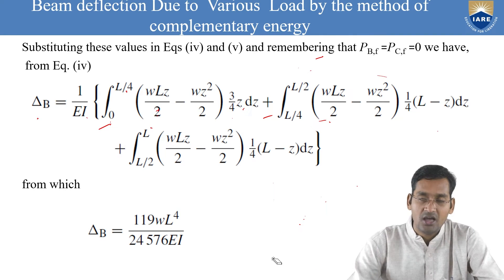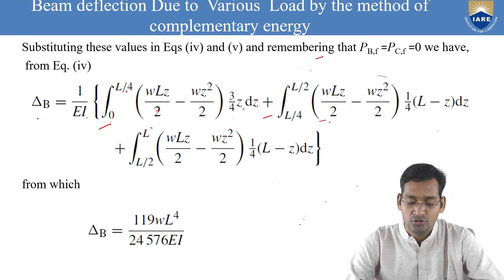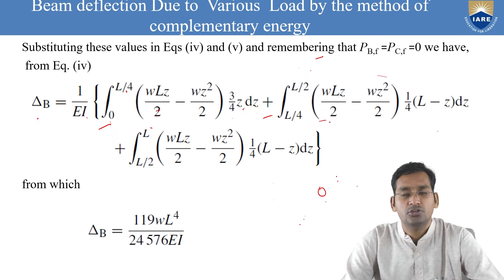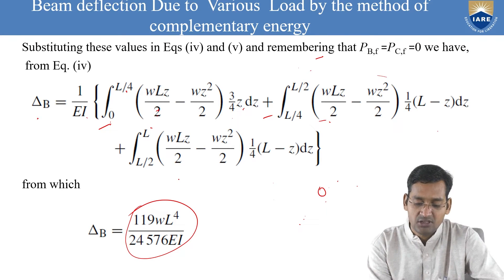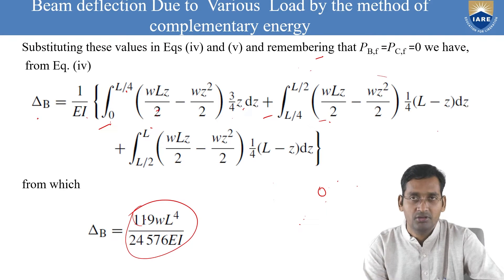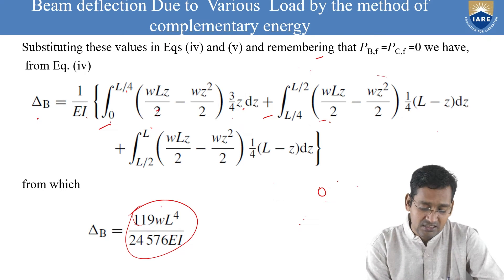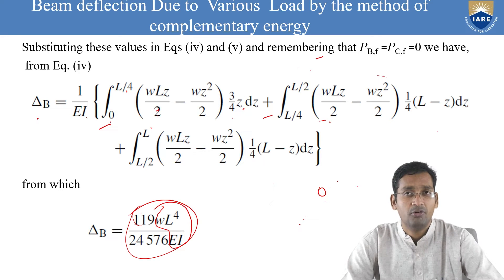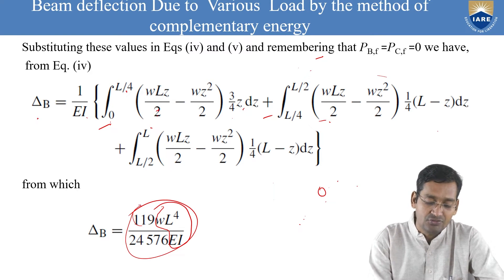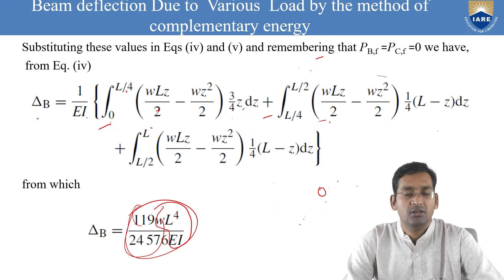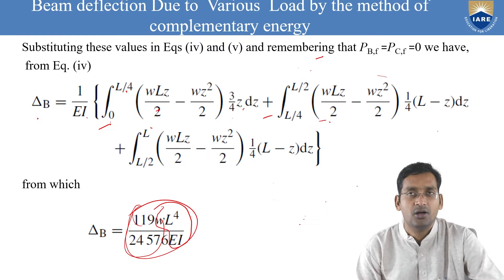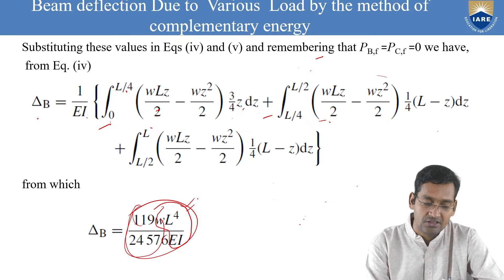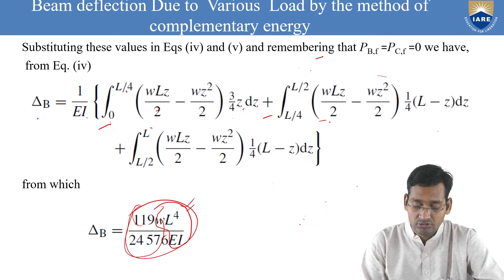When evaluating the integrals with limits, apply upper limit first then subtract the lower limit result. Use proper curly brackets when the lower limit is not zero to avoid sign errors — a minus sign can accidentally become plus. After evaluating the definite integrals, simplify using LCM where needed. The final answer may be expressed as a decimal or as a fraction; both are acceptable provided they match.